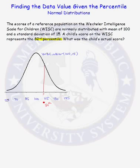The 82nd percentile is the data value — the WISC score — that has 82 percent of the area under the curve to the left of that value, and we are looking for that value.